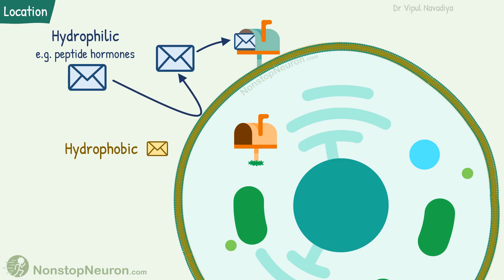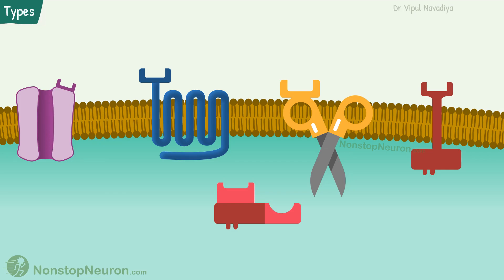Intracellular receptors are for hydrophobic messengers, for example steroid hormones. Such molecules are smaller and hydrophobic, so they can pass through the lipid bilayer and bind with the receptor inside the cell. That was some basics about the location of receptors. Now let's see the different types of receptors.